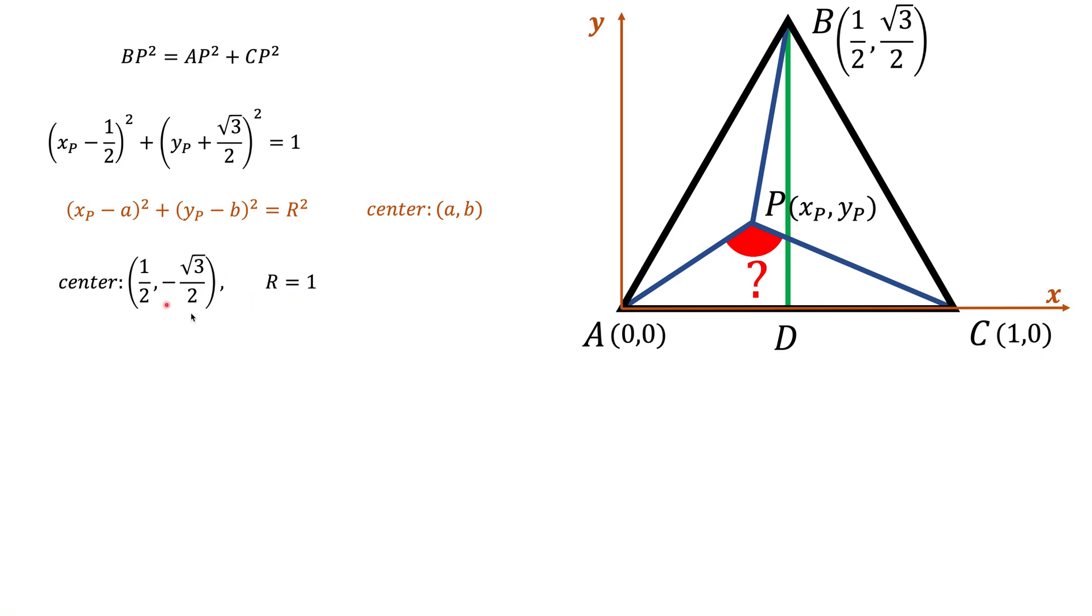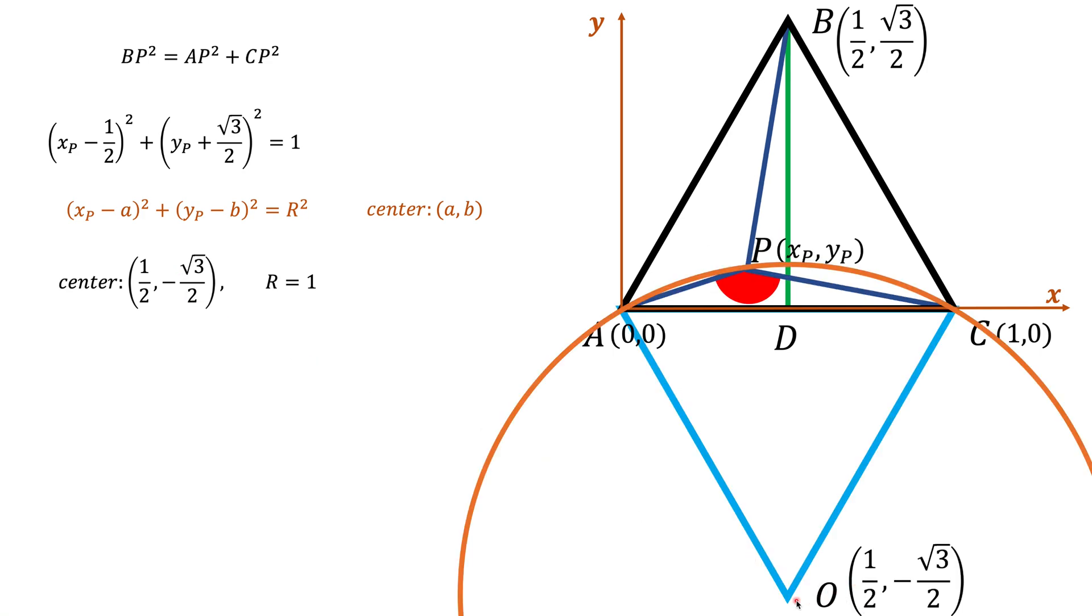So let's call the center of the circle point O. In this case, we find that point O should be right here. And you'll find an interesting fact that really this triangle AOC is an equilateral triangle. And in fact, it's really a mirror image of triangle ABC if you flip this triangle over the horizontal axis X.